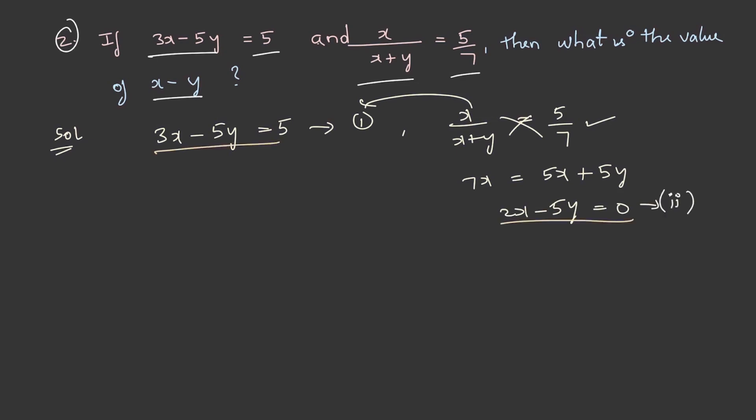From these two equations, let us find the values of x and y. 3x - 5y = 5, and 2x - 5y = 0. So, subtracting the second equation from the first, we get the value of x as 5.